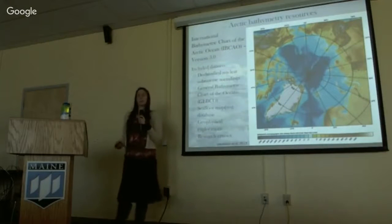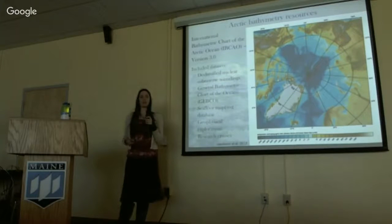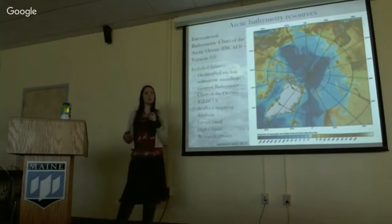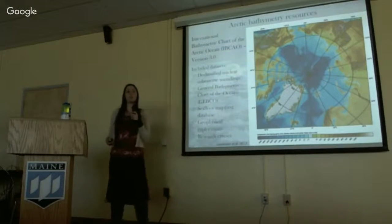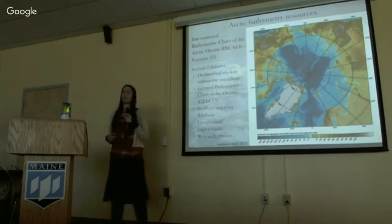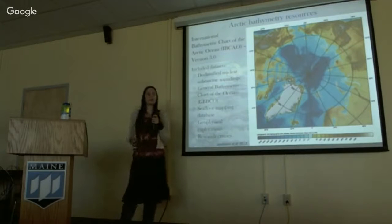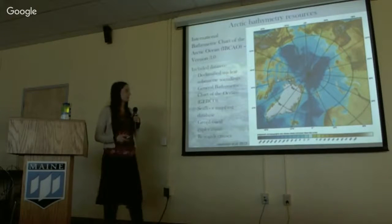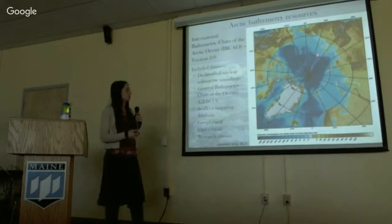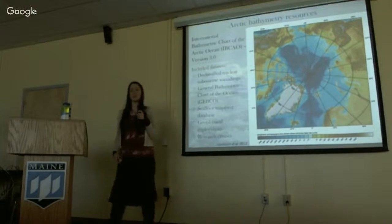It might come as a surprise that this bathymetric information is not available. We have this conception that we've done a pretty effective job of mapping most of the ocean sea floor. In the late 1990s, a lot of scientists, researchers, and governments realized that we didn't have this information well compiled for the Arctic Ocean because it's often covered in ice. An interdisciplinary group formed the International Bathymetric Chart of the Arctic Ocean, which is currently on its third version and is a very important resource allowing improvements in ocean circulation, modeling, and navigation.